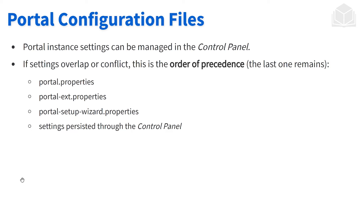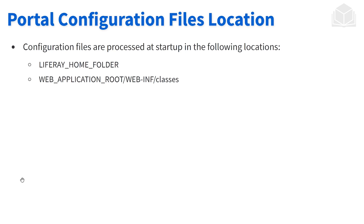We can also configure properties within the control panel of Liferay, and the control panel takes precedence over all of the property files. So the order of precedence from top priority is: control panel, then portal-setup-wizard.properties, then portal.ext, then portal.properties. These portal configurations are read during startup, so when making changes to portal.ext, make those changes and then start up Liferay. If Liferay has already started, reset it for any changes within the property files to be picked up.